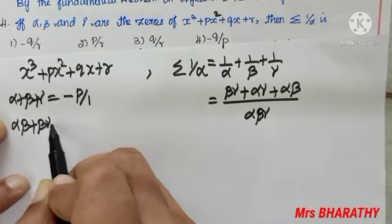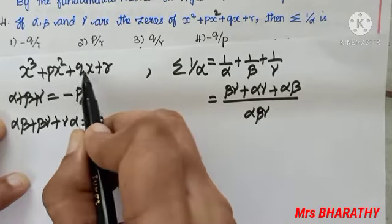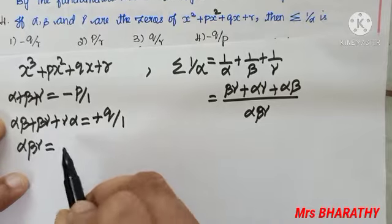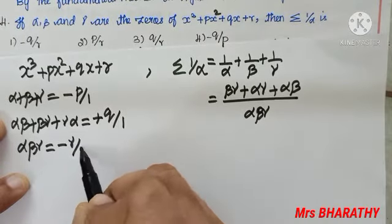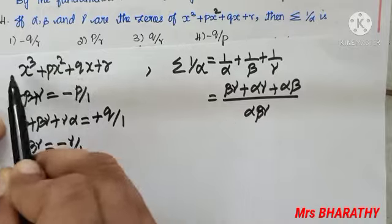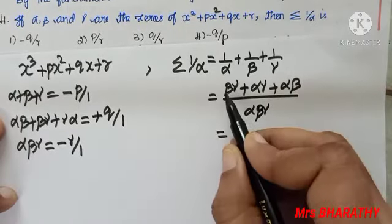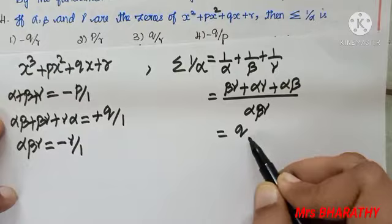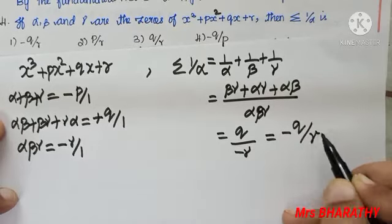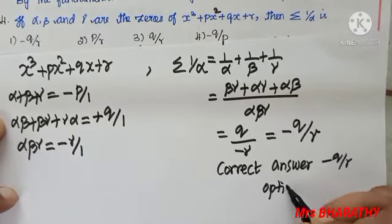The double combination αβ + βγ + γα = q, and the triple product αβγ = -r. So together, Σ(1/α) = q / (-r) = -q/r. The correct answer is -q/r, option 1.